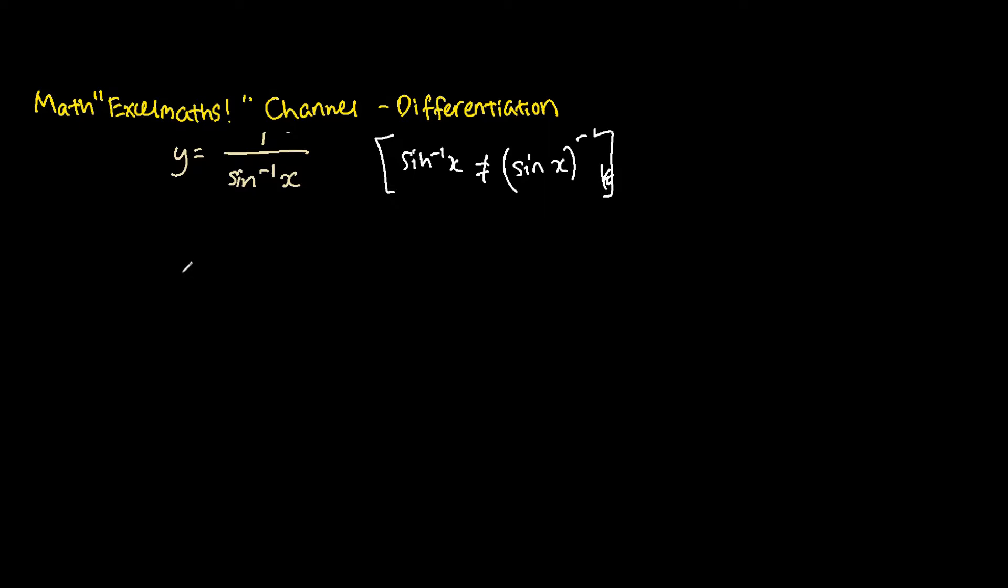So basically what you do for this question itself, the first thing that you will do is to multiply both sides by sine inverse x. So I have y sine inverse x equals to 1, and then I will differentiate both sides with respect to x.